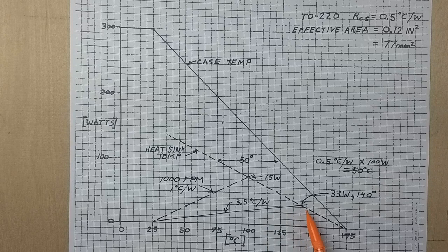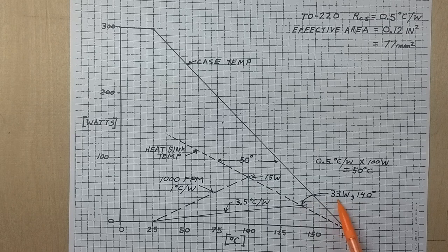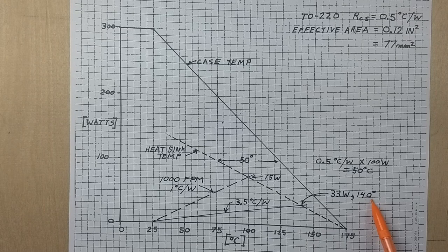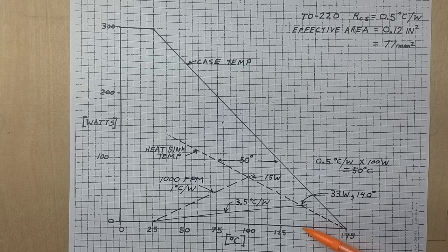So in that case, with just normal convecting air, the intersection is at 33 watts and 140 degrees C. So you can see where a 300 watt device is really only good for 33 watts when you do all the thermal considerations.